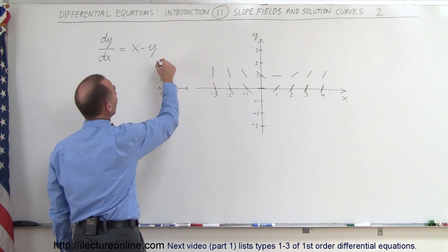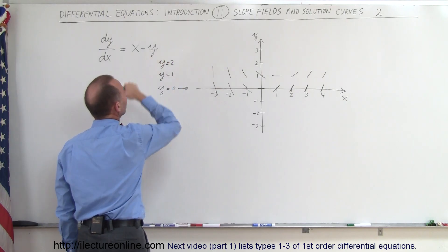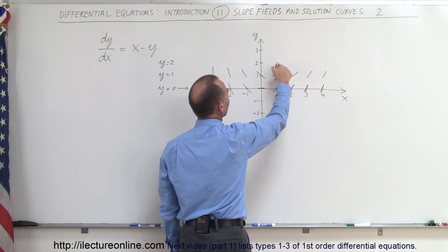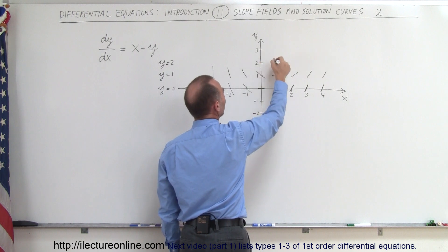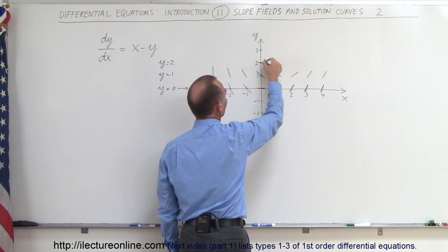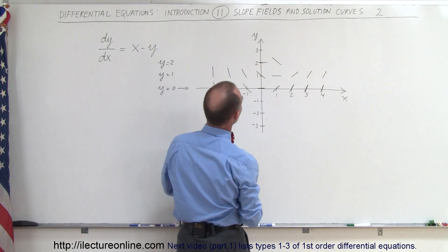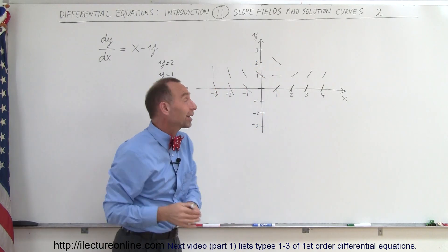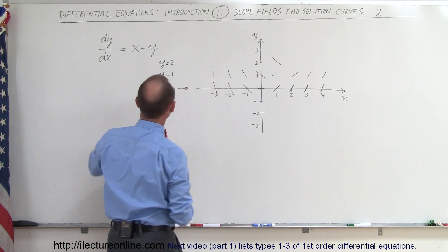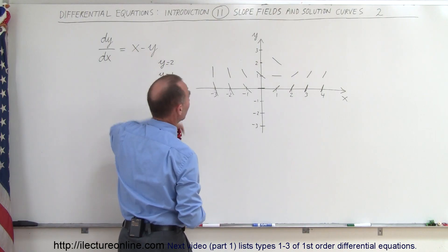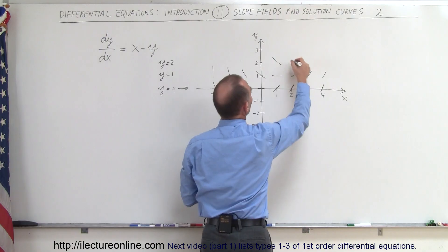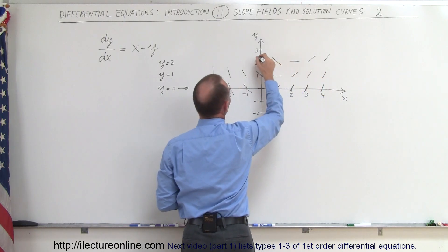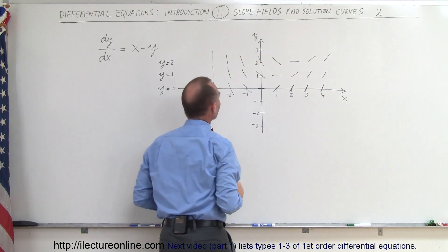Now we go to the line y equals 2, and now we subtract 2 from every value of x. So it's x minus y — if y equals 2: 1 minus 2 is negative 1, 2 minus 2 is 0, 3 minus 2 is 1, and that would be 2. And on the left side: negative 2, negative 3, negative 4, negative 5.